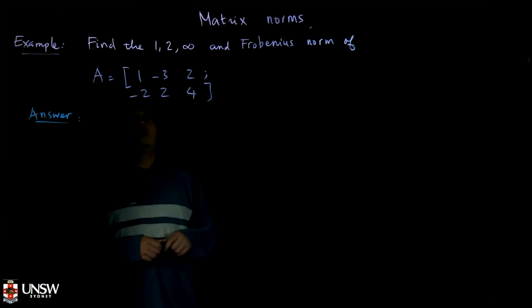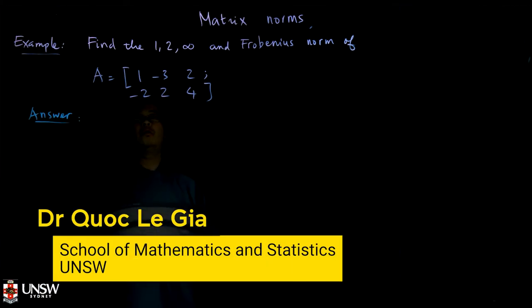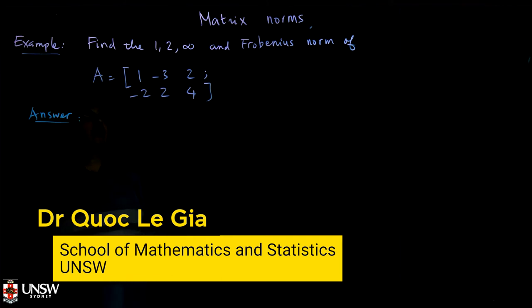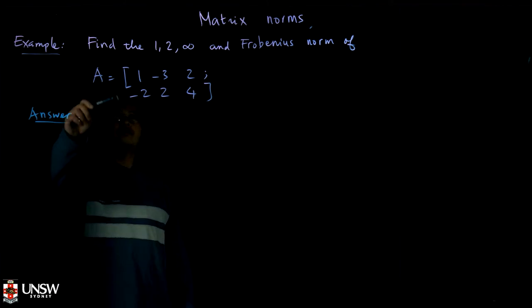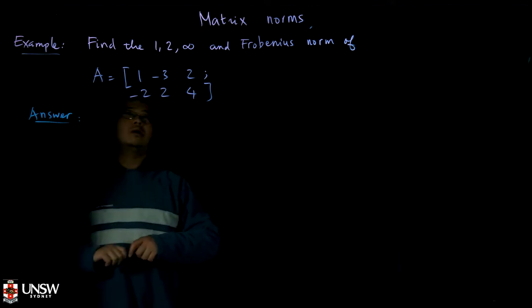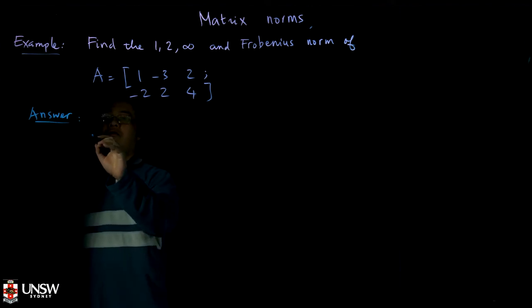In this example, we are asked to find the 1, 2 and infinity and Frobenius norm of this rectangular matrix. So first, how do we find the 1 norm?